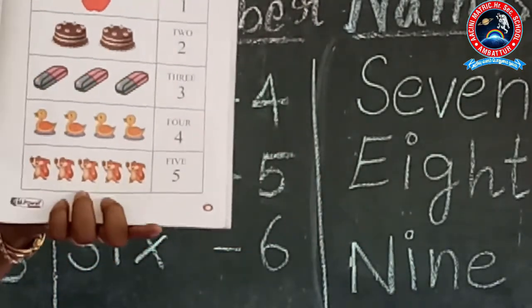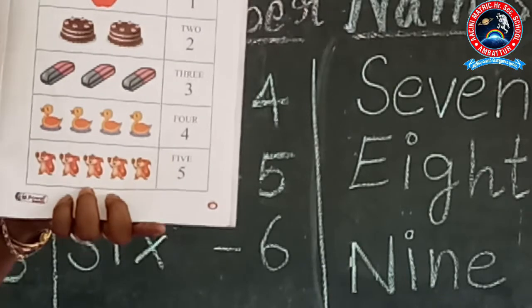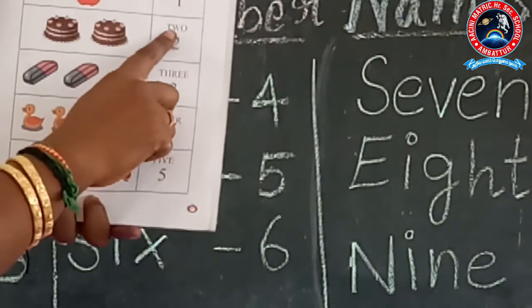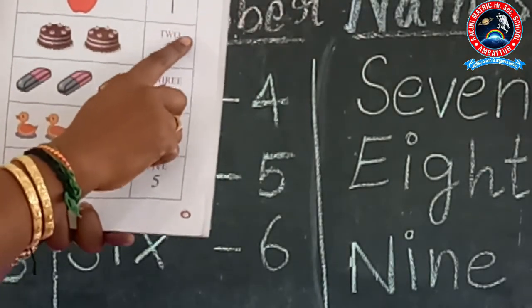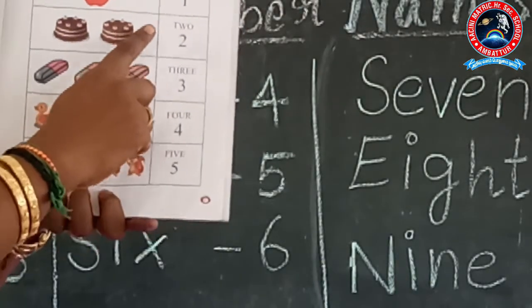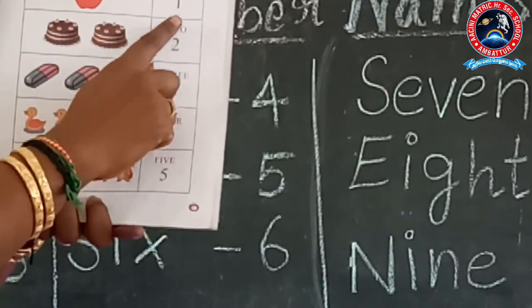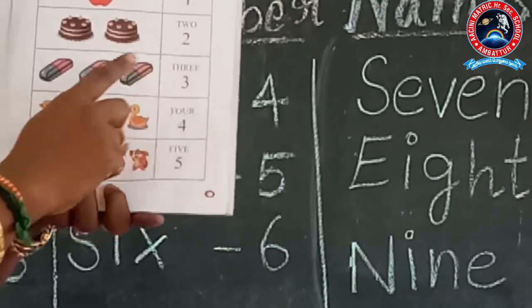Now how many cakes are there? 1, 2 — 2 cakes are there. Now: T-W-O, 2. Repeat: T-W-O, 2.